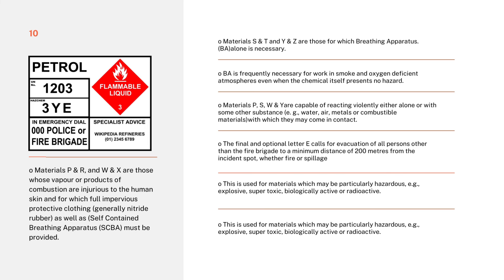The final and optional letter E calls for evacuation of all persons other than fire brigade to a minimum distance of 200 meters from the incident spot, whether it is a fire or spillage. This is used for materials which may be particularly hazardous — explosive, super toxic, biologically active, or radioactive. For example, in the code '3YE': 3 denotes foam extinguisher, Y denotes the material cannot be diluted, must be contained, and may react violently, and E denotes evacuation to 200 meters.